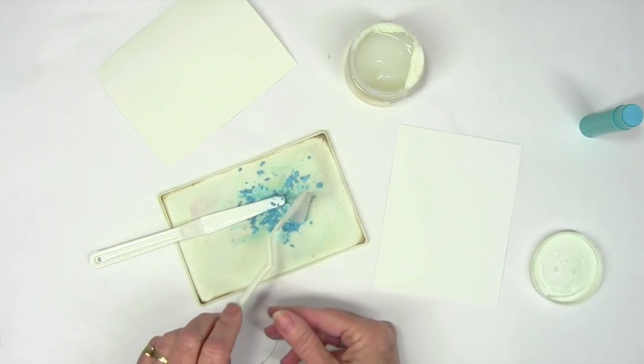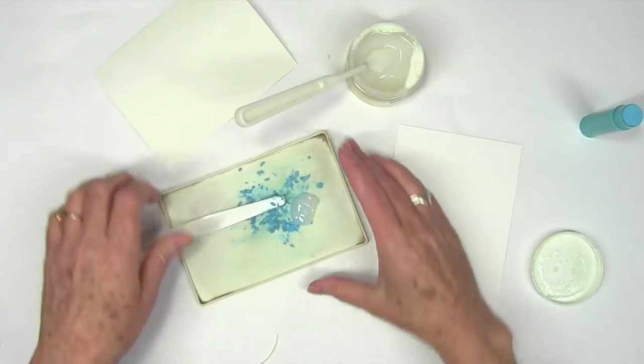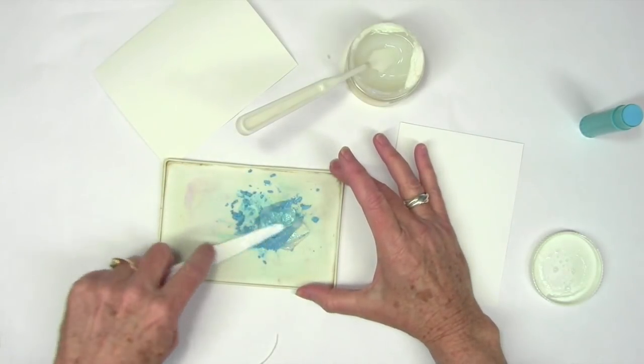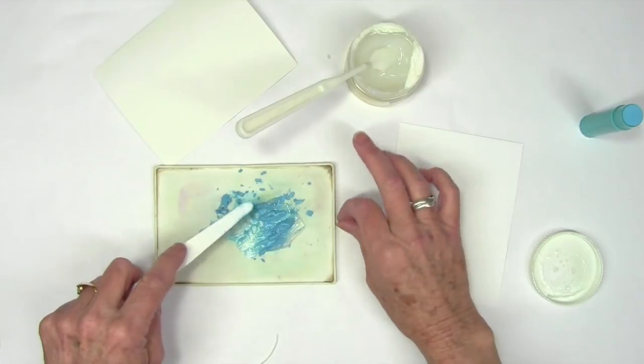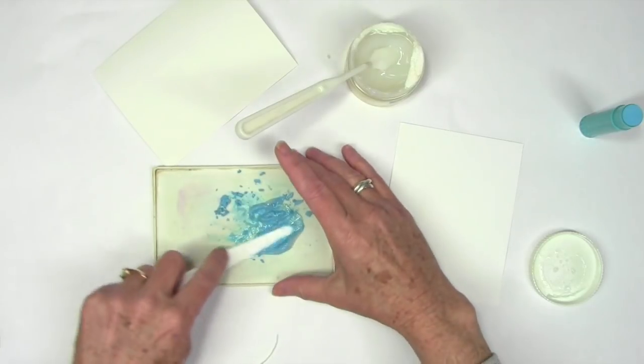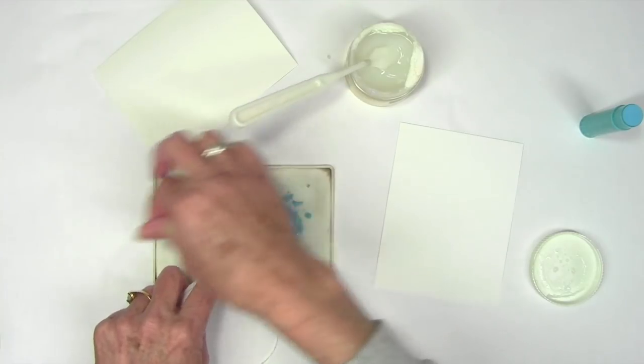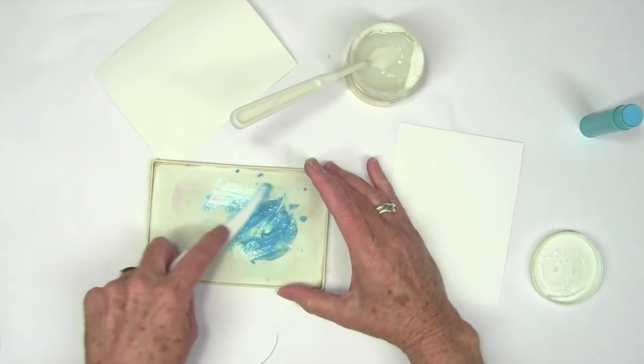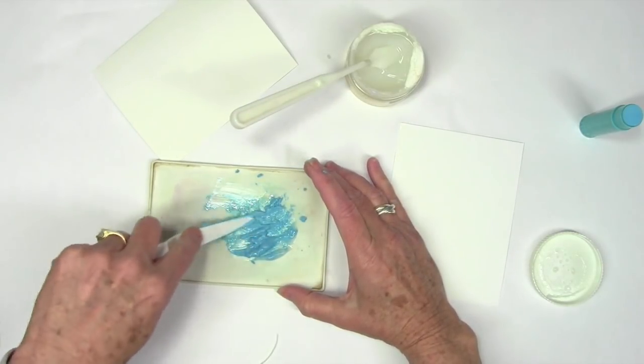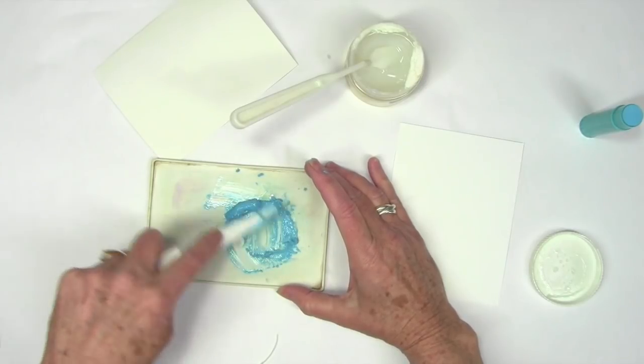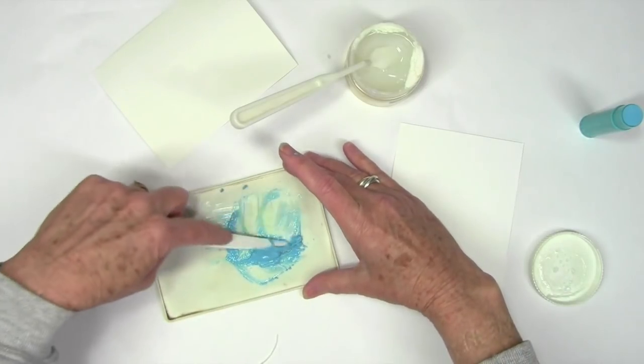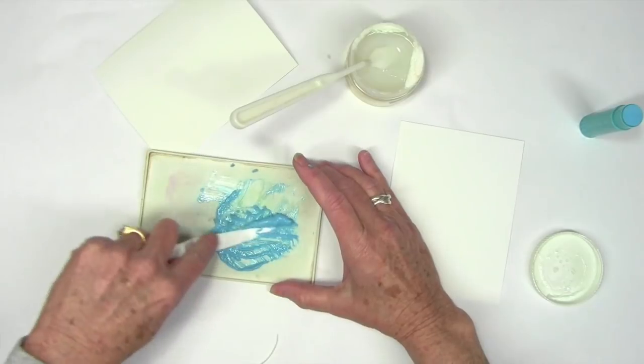I'm just going to give that one good scoop out. I'll start mixing my Gelatos right into that glaze. This will give me really great concentrated color. You can see it's starting to make like a paste. That Gelatos is breaking down with the fluid from the glaze.